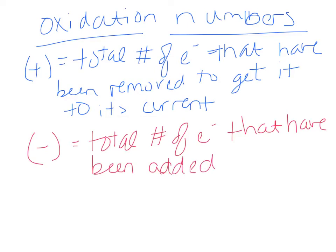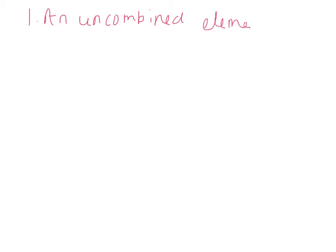In water, two electrons have been added to the oxygen (making it negative 2), and one electron has been taken from each hydrogen. If that oxygen were uncombined, its oxidation number would still be zero. But because it's bonded with hydrogen, that changes its oxidation number. Third rule: the more electronegative element in a substance — the one with a stronger affinity for electrons — is given a negative oxidation state.